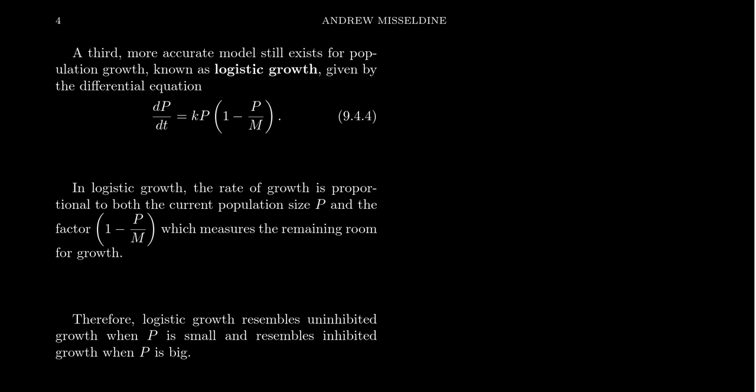If your population is so small, it might actually be difficult for organisms to find each other, reproduce, mate, and spread. In which case, the more population there is, the more you can grow, but also you can't grow too big. So what we want is a growth model that's a compromise, and that's this logistic growth model.